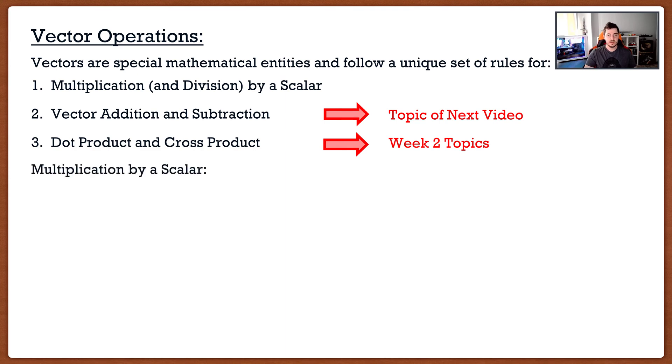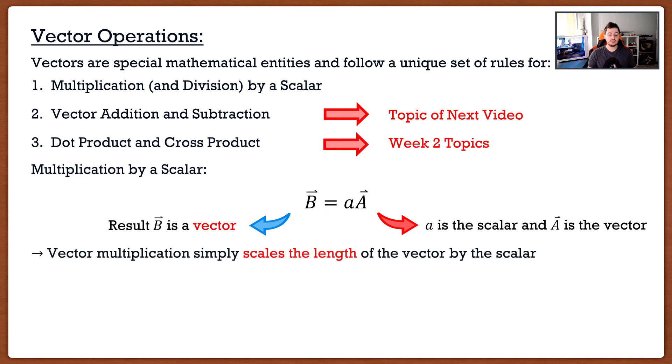Now let's talk about multiplication by a scalar. It sounds complex, but it's actually really simple. If we were to have a vector A and multiply it by a scalar, small a, the result is actually going to be another vector B. Vector multiplication simply scales the length of a vector by the scalar.